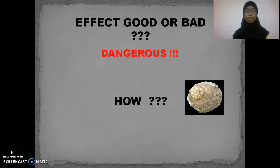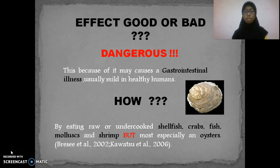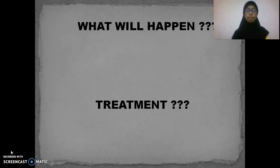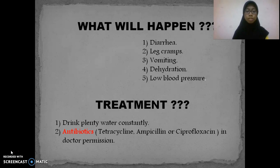Does Vibrio parahaemolyticus have a good or bad effect? It is dangerous, as it may cause gastrointestinal illness, usually mild, in healthy humans. Infection occurs by eating raw or undercooked shellfish, crab, fish, mollusks, and shrimp — but the most dangerous is especially eating raw oysters. It will cause diarrhea, leg cramps, vomiting, dehydration, and low blood pressure. Treatment involves drinking plenty of water constantly and taking antibiotics with a doctor's permission, such as tetracycline, ampicillin, and ciprofloxacin.